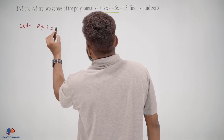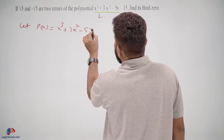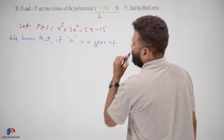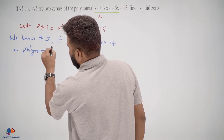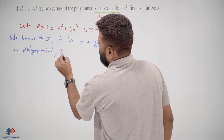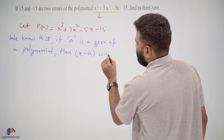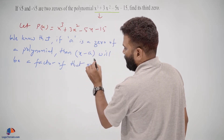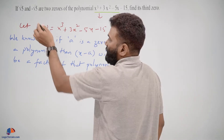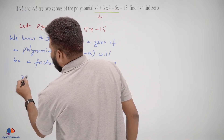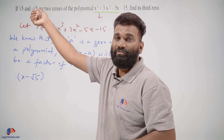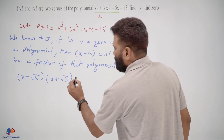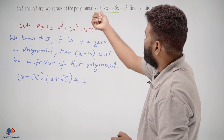Let p(x) equals x cubed plus 3x squared minus 5x minus 15. We know that if a is a zero of a polynomial, then x minus a will be a factor of that polynomial. So using this condition: since square root 5 is a zero, x minus square root 5 is a factor; since negative square root 5 is a zero, x plus square root 5 is a factor. Let the third factor be a. So the product of all three factors equals p(x).